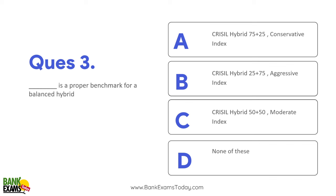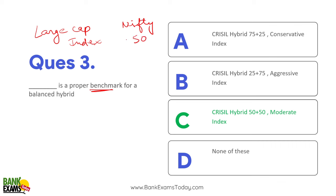The proper benchmark for balanced hybrid funds is the Crisil Hybrid 50+50 Moderate Index. For example, a large cap fund's benchmark is Nifty 50. A benchmark is used to compare your performance — whether you did better or worse than the market. So Crisil Hybrid 50+50 is the benchmark for balanced hybrid funds.